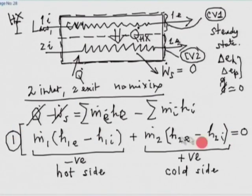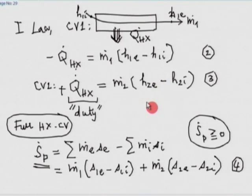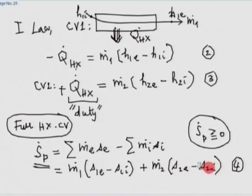For OS 17 or 18: enough information is available to determine the end states. Use the overall energy balance to find any missing mass flow rate or enthalpy. Assume negligible pressure drop if no information is provided. Once all inlet and exit states are known, calculate entropy differences for each stream and substitute into equation 4 to solve for S_dot_p.